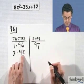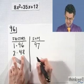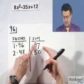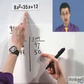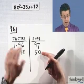So how about 2 times 48? If I add them together, you'll notice I get 50. That's a lot smaller than 97, so this is looking good because I'm trying to shoot down to 35. So I'm making progress maybe.